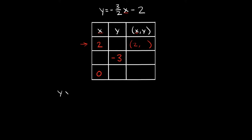We have y is equal to negative 3 halves times x, and x is a 2, so we're going to plug in a 2 for x. And then we have this minus 2 at the end. Now simplifying this: negative 3 halves times 2 — we can see that this 2 on top and this 2 on the bottom cancel out, so we're just left with negative 3 right there.